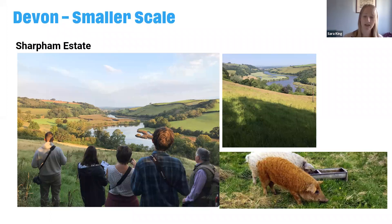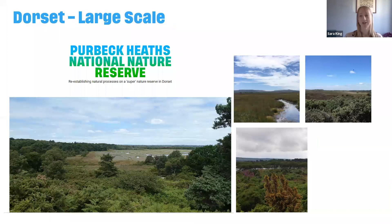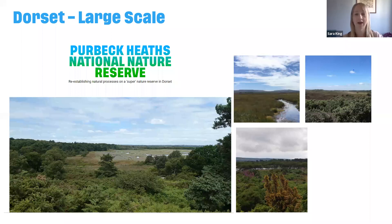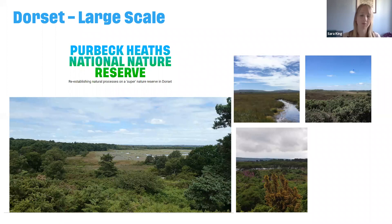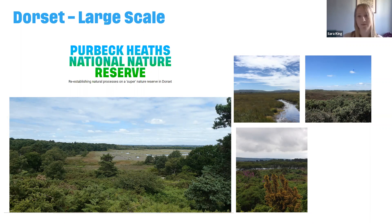In Dorset, one of the largest emerging projects is Purbeck Heaths National Nature Reserve. Excitingly, they're working on whether they can join up with different landowners to create a super nature reserve and share grazing — creating a contiguous area where grazers can move through the landscape naturally. This would be one of the first of its kind where animals can move across different land holdings, mimicking natural herbivore behaviour — munching on meadows in one place, pushing down trees in another — creating a real mosaic of heathlands, woodlands, grasslands and wetlands.